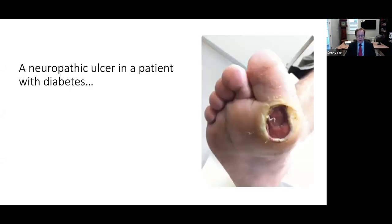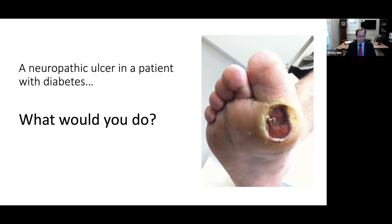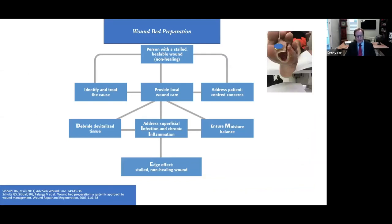Here's a typical neuropathic ulcer in a patient with diabetes. What would you do here? Some of the standard of care are pretty straightforward. We're going to debride, we're going to offload, and we're going to use moist wound healing. In many cases, when you have patients like this with significant hyperkeratosis to the peri wound, all of that needs to be debrided away. But more importantly, we really have to think in terms of treating these patients holistically. The methodology most often used and discussed is wound bed preparation — a holistic way of viewing the patient even before we begin treating the wound itself.